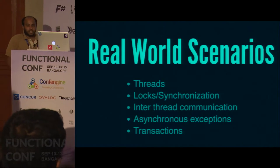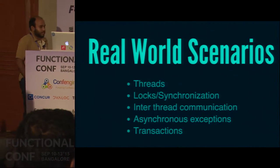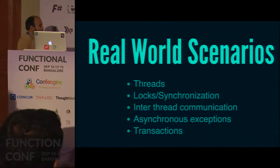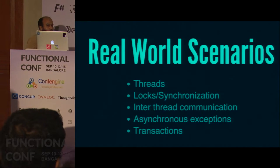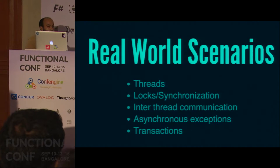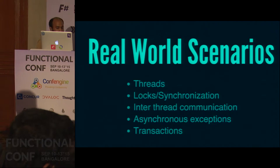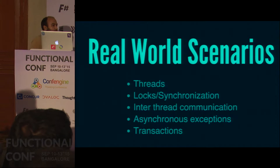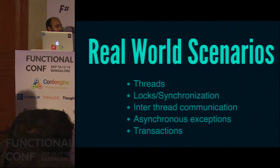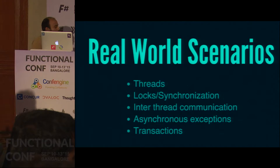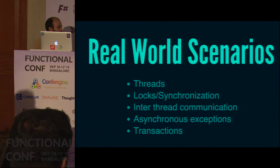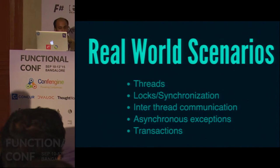Locks and synchronization between threads — you will have some piece of code which is critical. These are critical sections and you cannot afford to have multiple threads modify those critical sections at the same time. Similarly, you would need some way to communicate between multiple threads. You may have a worker thread and a master thread, and when the worker thread is done it should notify the master thread with the result of the calculation.